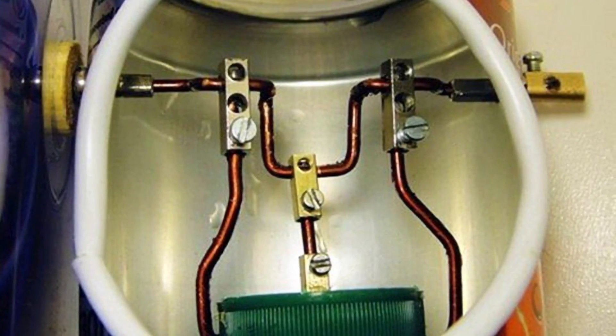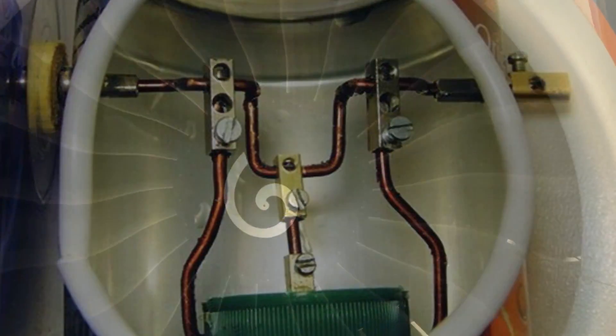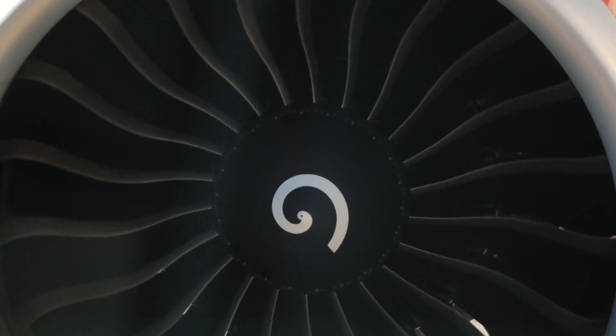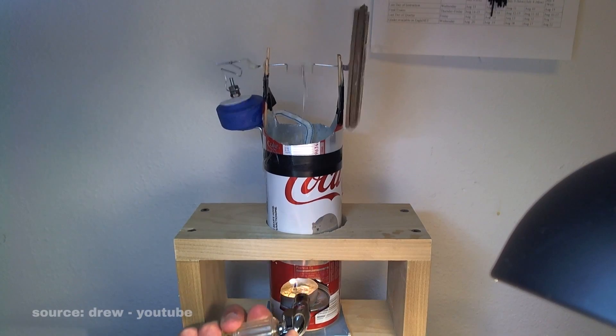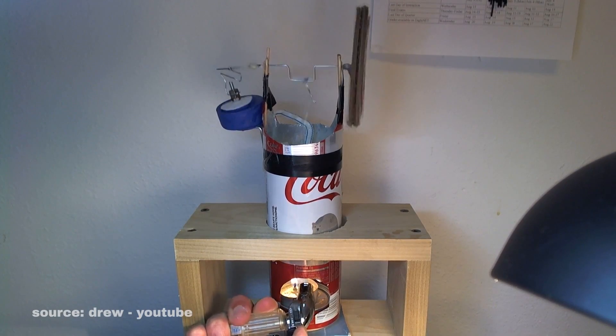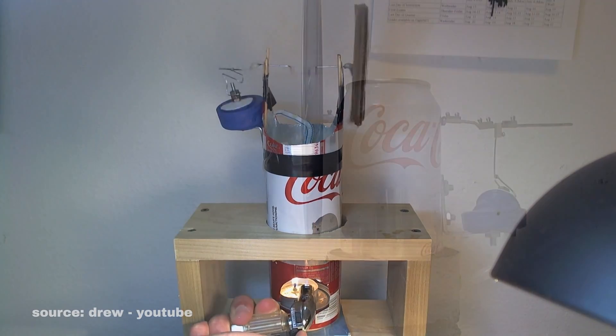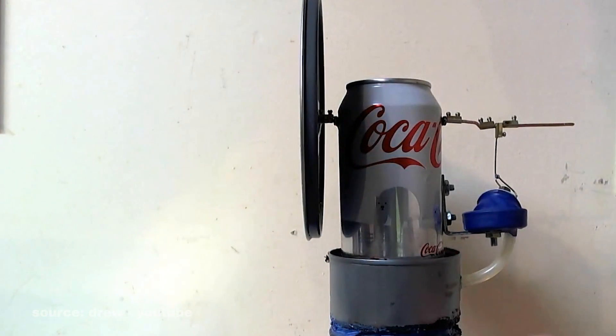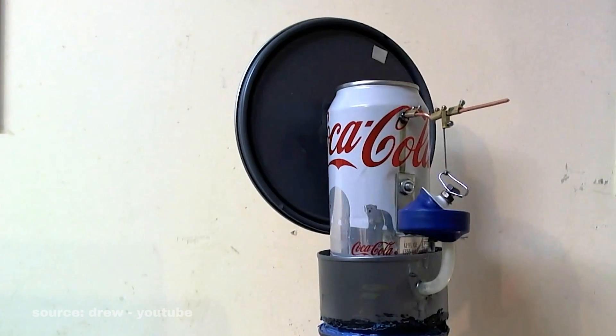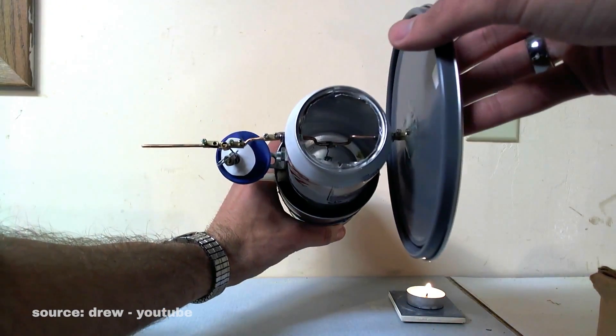This sterling engine is run on a tea candle, while the crankshaft is made from a jumbo paper clip and is attached to a fishing line. As we've already mentioned, sterling engines are mostly used in large vehicles, aircraft, and marine engines. So while we're not really sure what this coke can sterling engine can be applied to, it's truly unique in its design and creation.